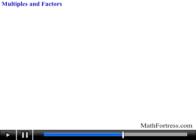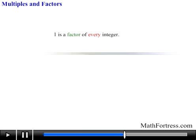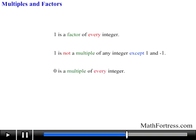Some final details about factors and multiples to keep in mind: 1 is a factor of every integer. With that said, 1 is not a multiple of any integer except 1 and negative 1. And remember, 0 is a multiple of every integer, and 0 is not a factor of any integer except 0.